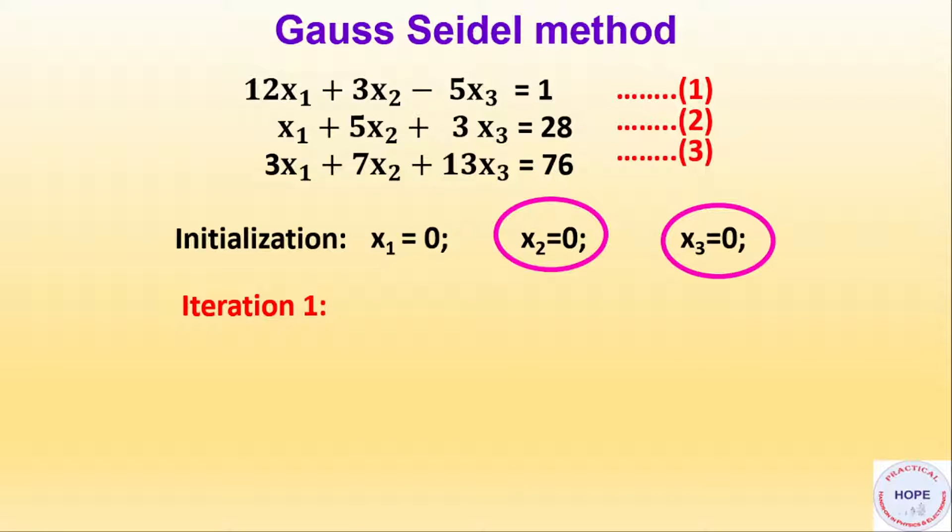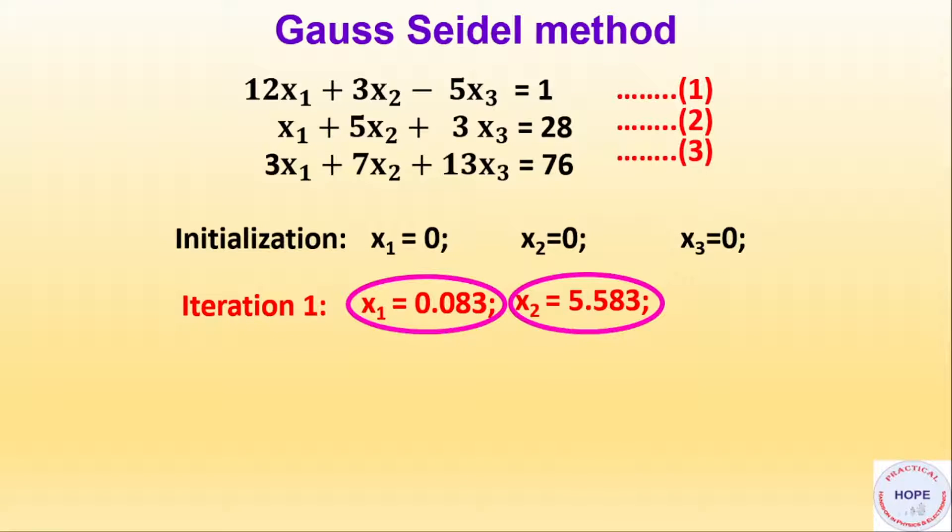Using these two values x2 and x3 we can find the value of x1 from equation 1. So this is x1. Next by using the value of old x3 and new x1 we can find the value of x2 from equation 2. Then using new values of x1 and x2, we can find the value of x3 from equation 3.